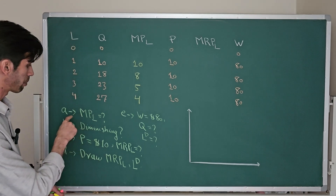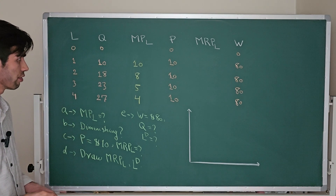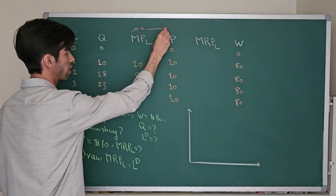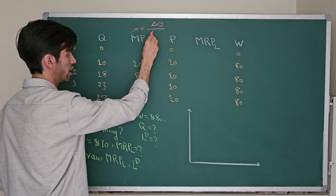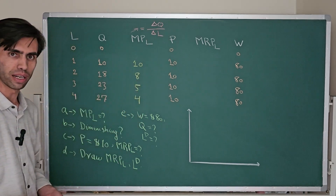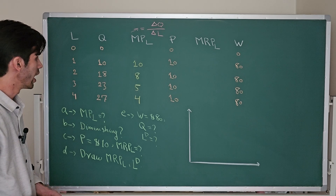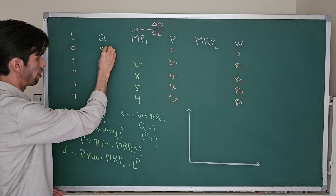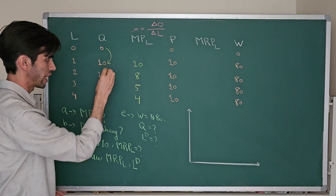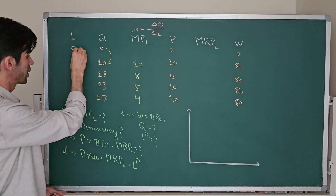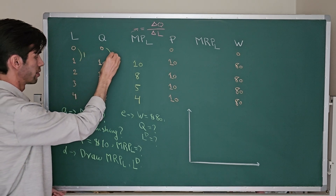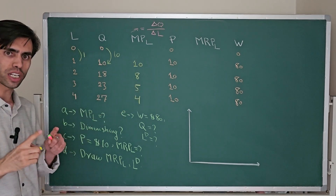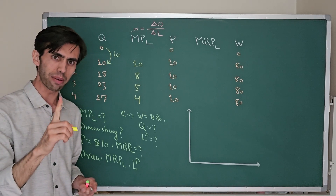Let's start with part A: the marginal product of labor. The marginal product of labor is equal to the change in quantity over the change in the number of labors. Moving from 0 to 1 worker, the quantity of output moves from 0 to 10. The change in output is 10 and the change in labor is 1, so 10 divided by 1 equals 10. The marginal product of labor for the first worker is 10.